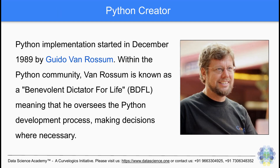Python is the brainchild of Guido Van Rossum. He implemented Python in December 1989. Within the Python community, Van Rossum is known as a benevolent dictator for life, meaning that he oversees the Python development process, making decisions where necessary. Van Rossum announced in July 2018 that he would be stepping down as BDFL of Python without appointing a successor, effectively eliminating the title within the Python community.